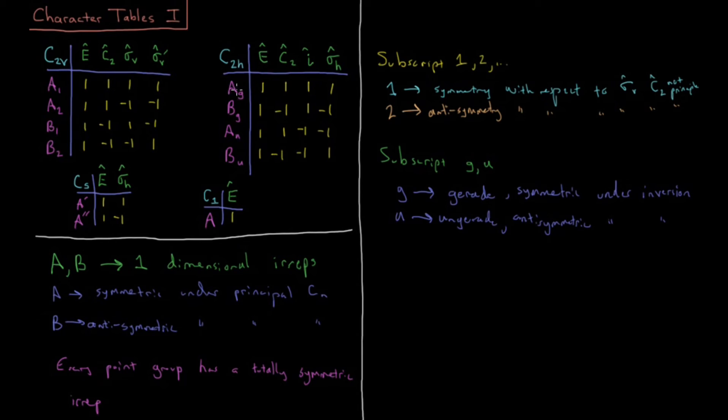So C2H has an inversion center, has four irreps, AG, BG, AU, and BU. These two are gerade, these two are ungerade. So the gerade are symmetric with respect to I, and the U's are ungerade with respect to I. They are anti-symmetric. And they're only going to have that G and U subscript if your point group has an inversion operator in it.